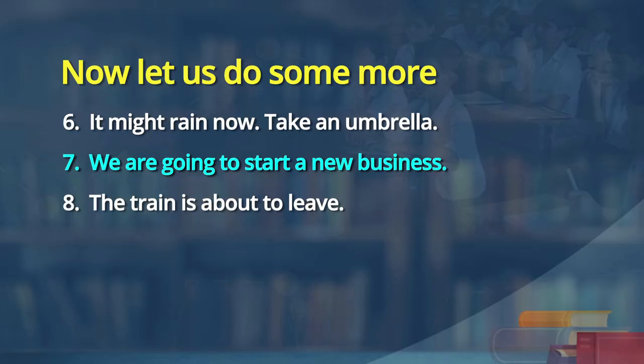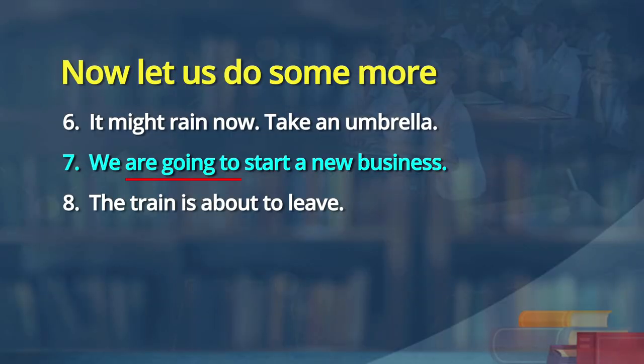We will discuss modals in another session. Let us concentrate now on how future time reference is expressed. Look at sentence 7: we are going to start a new business. The verb used is are going to — that is present continuous form, but it means future tense. So learners, note: going to also means future tense. And the train is about to leave — is about to also reports a future action. So we can use will, shall, are going to, or is about to for future tense.